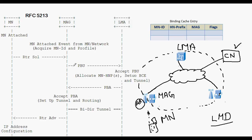Upon receiving the proxy binding update, the local mobility anchor checks if it conforms to the Proxy Mobile IPv6 specification. If not, the local mobility anchor will reject the proxy binding update and there will be no registration in the binding cache entry. If the local mobility anchor accepts it, it checks the binding cache entry data structure based on the mobile node ID, and if no entry is present, creates a new entry and assigns a home network prefix for the mobile node.